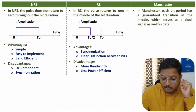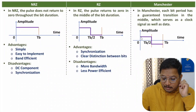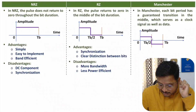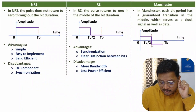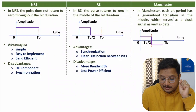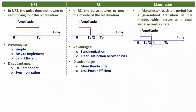Now let me discuss Manchester pulse. In Manchester, each bit period has a guaranteed transition in the middle of the bit, which serves as both a clock signal and data. Looking at the waveform: for logic one, there is initially active high amplitude, then a transition at Tb/2 to negative amplitude. For logic zero, there is initially active low amplitude, then a transition from low to high at Tb/2. So in Manchester, every bit has a guaranteed transition.